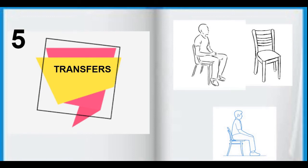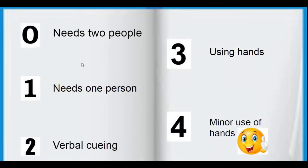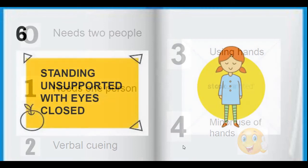The fifth task is transfer. Two chairs are properly arranged and we ask the person to transfer from one chair to another. If they cannot do it independently and require assistance, we give a score of 0. If they can transfer with minimal usage of hands or without assistance, we give them the maximum score of 4.